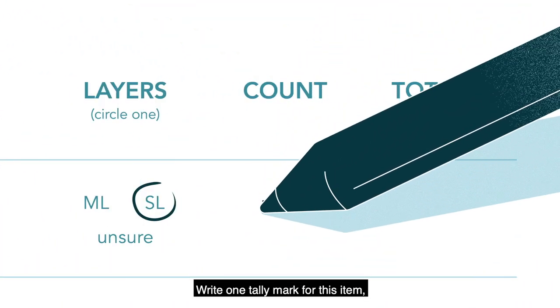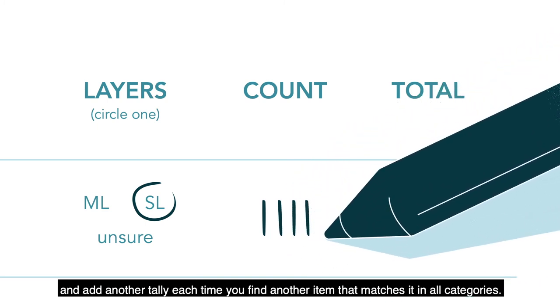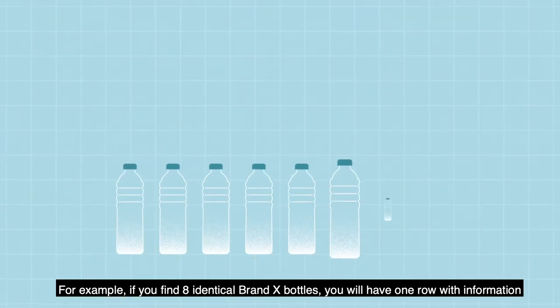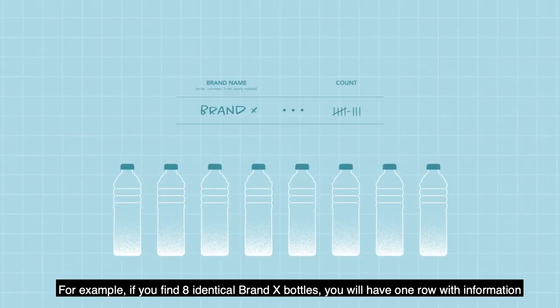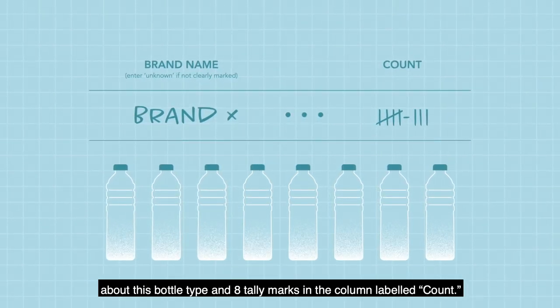Write one tally mark for this item and add another tally each time you find another item that matches it in all categories. For example, if you find eight identical brand X bottles, you will have one row with information about this bottle type and eight tally marks in the column labeled Count.